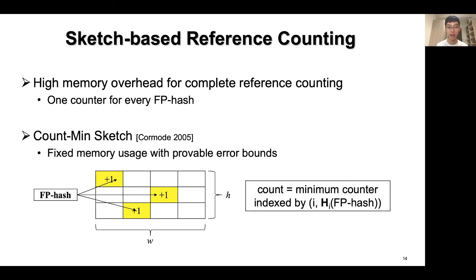Specifically, count-min sketch is a two-dimensional array with each row consisting of W counters. An FP hash is mapped to one counter in each row via independent hash functions. The counters record the total counts of all elements that hash to each counter. To estimate the count of one FP hash, count-min sketch returns the minimum value of the counters the FP hash is mapped to.